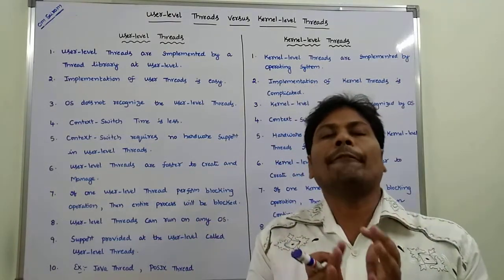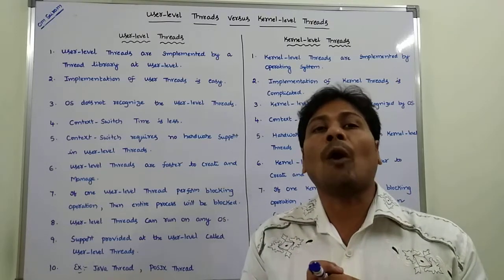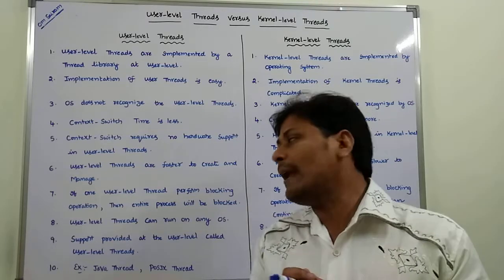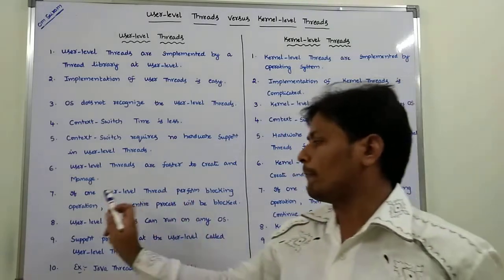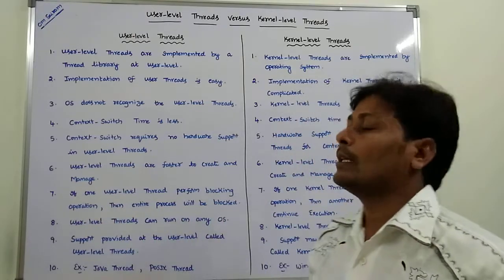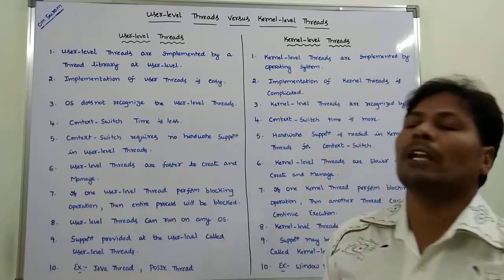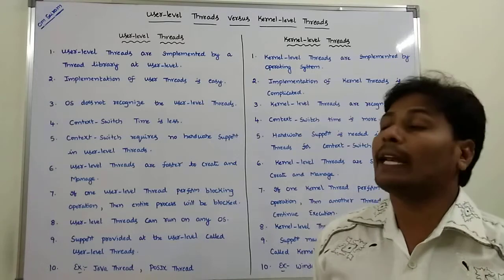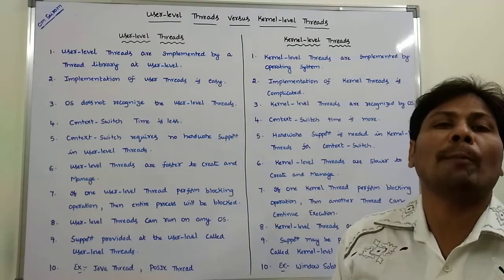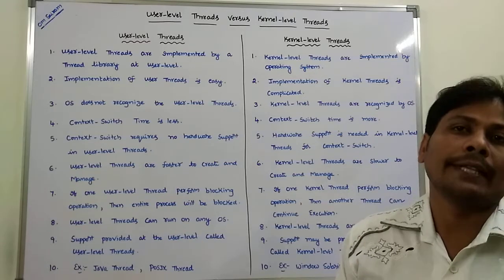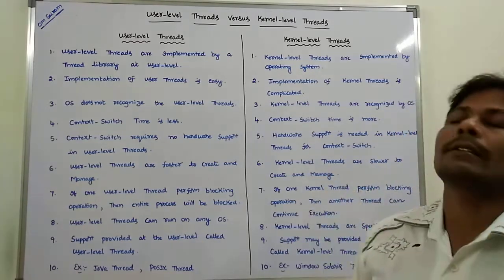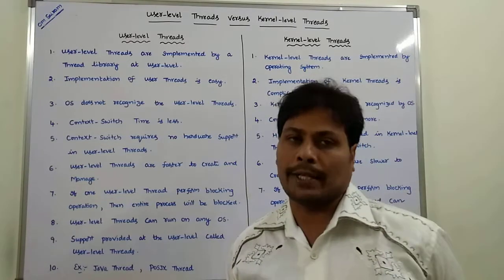If one user-level thread performs a blocking operation, then the entire process will be blocked. Whereas, in the case of kernel-level threads, if one kernel-level thread performs a blocking operation, then another kernel-level thread can continue its execution.